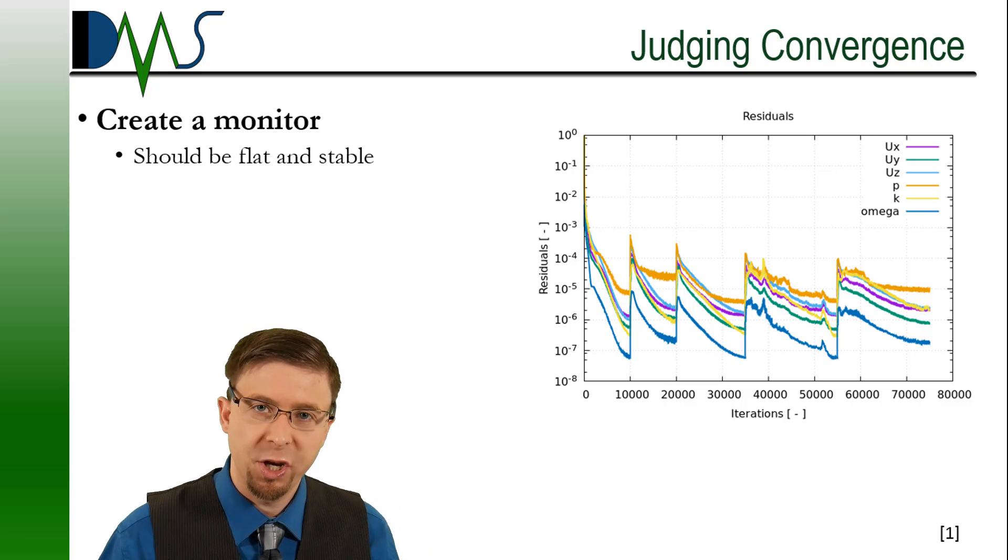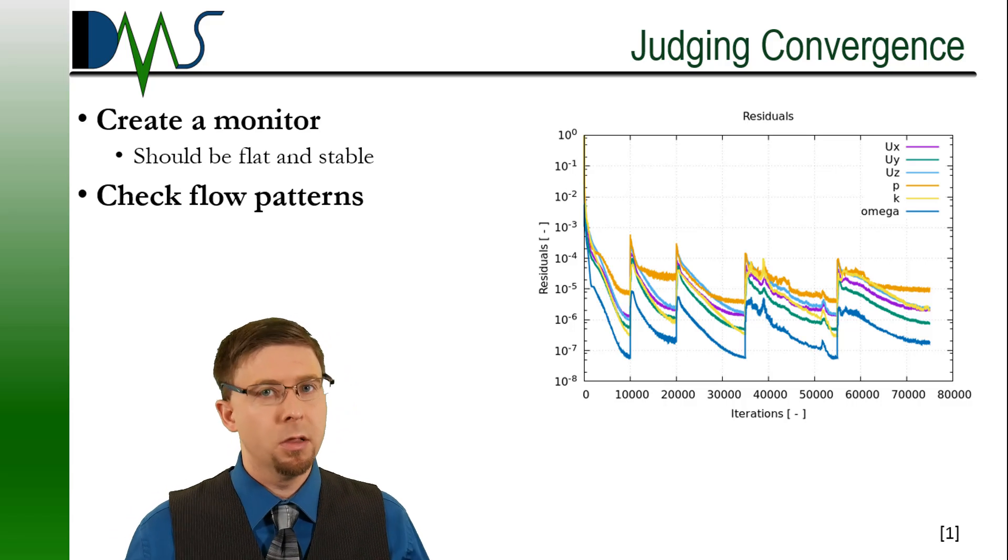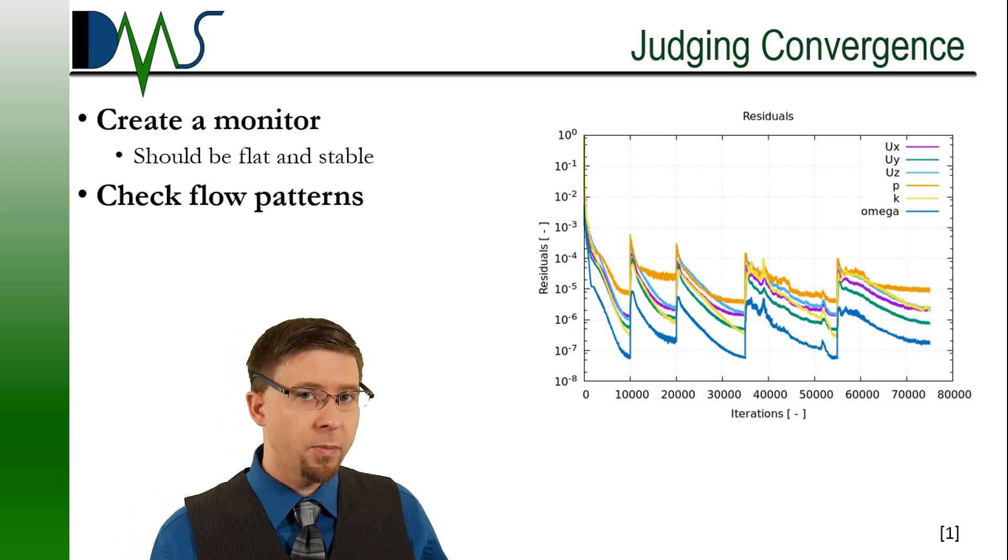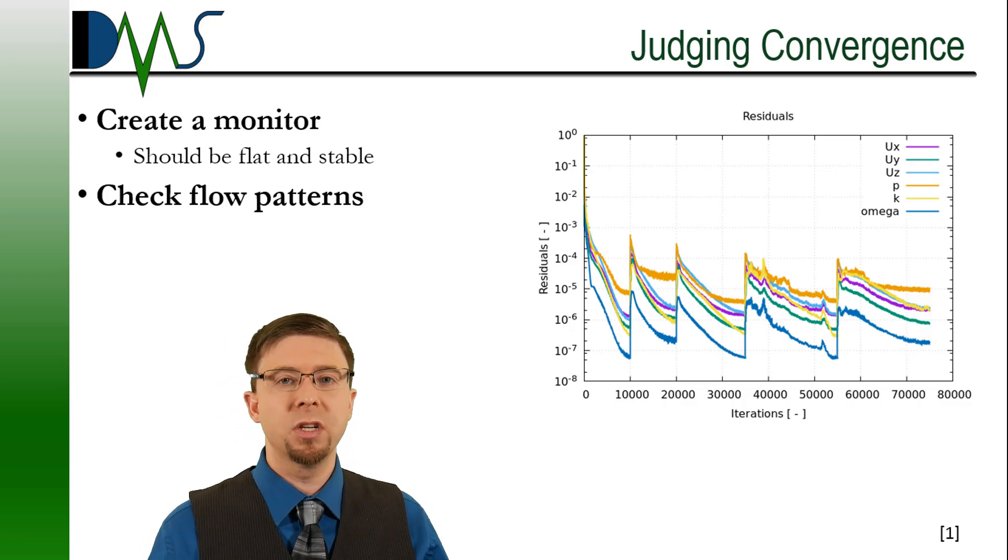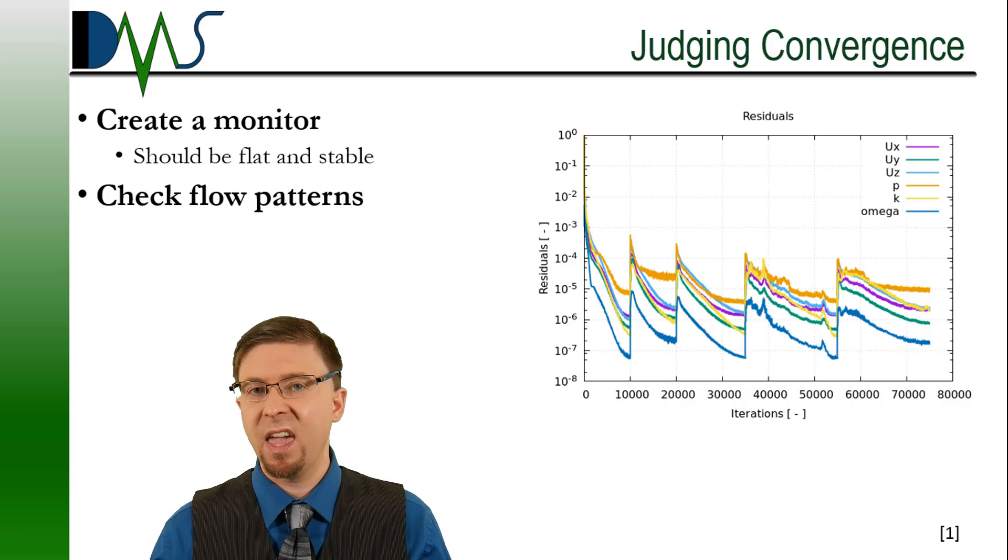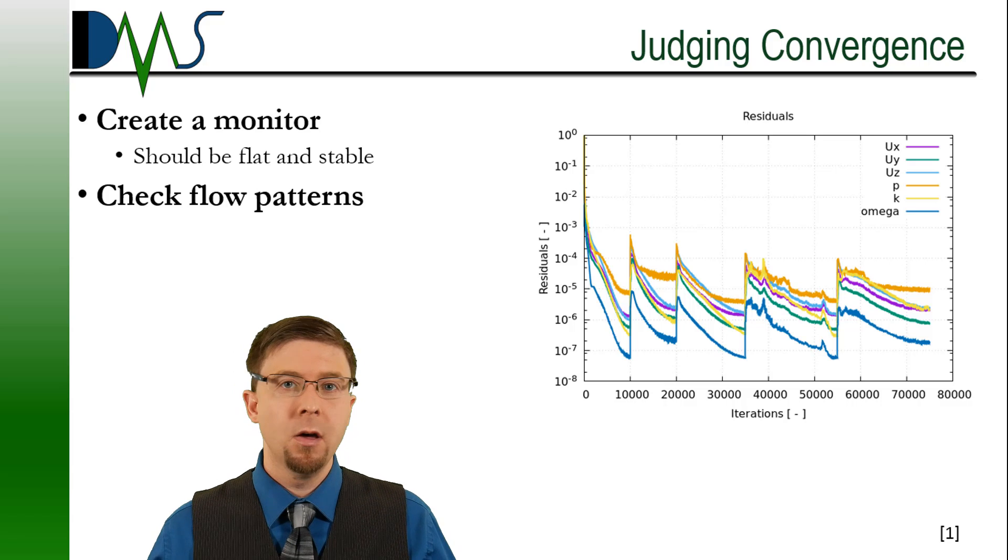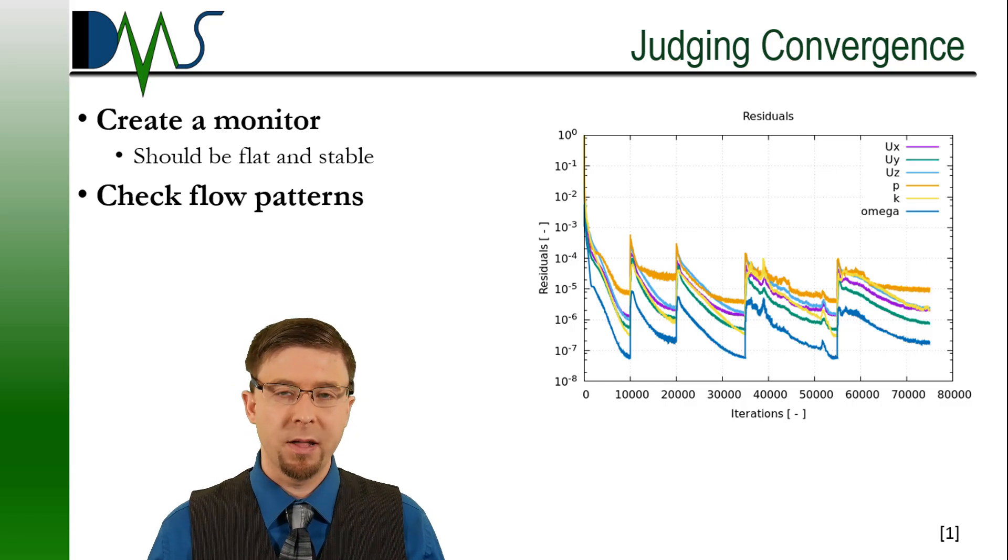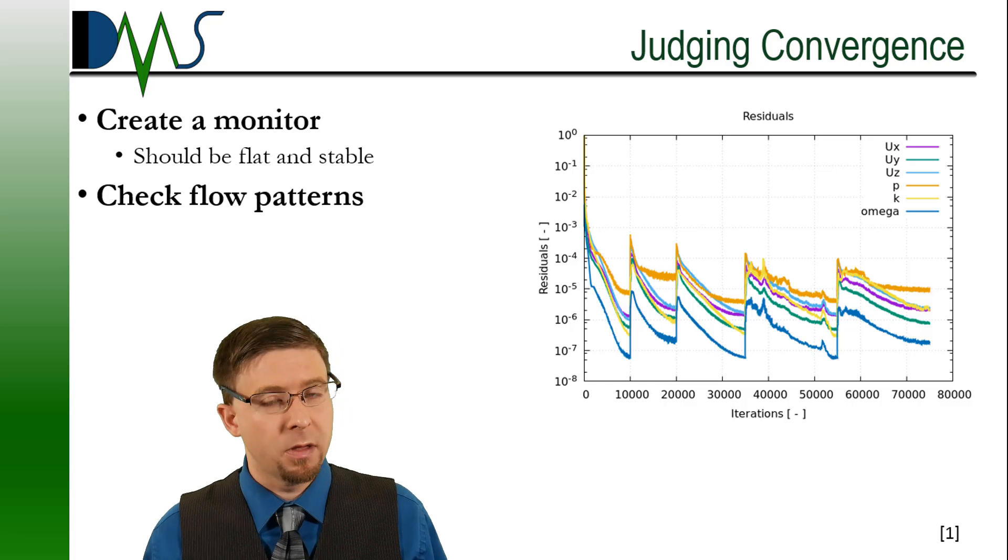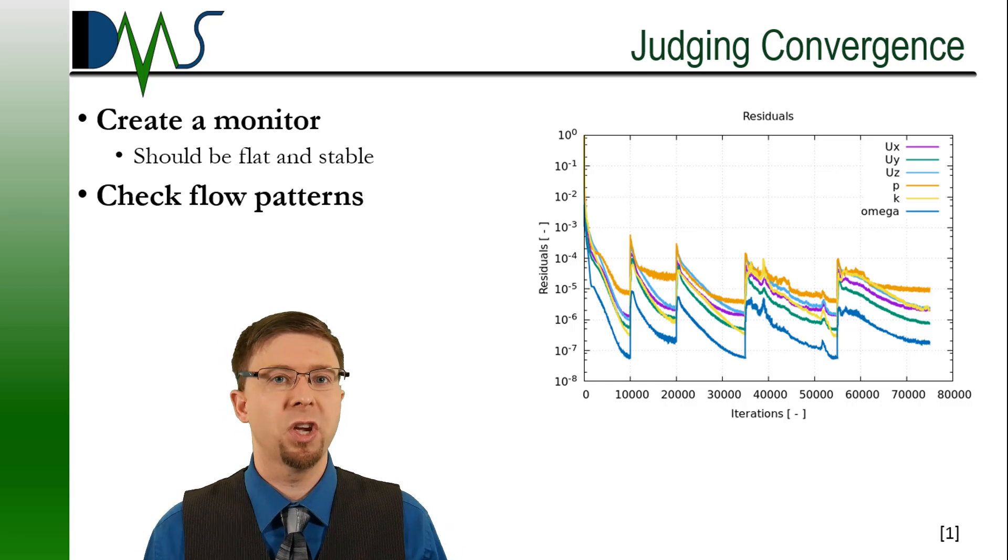The next thing you should also be checking is your flow patterns. Create visualizations in post-processing. Look at your flow patterns. Make sure that they make sense. Remember, your CFD solver is just a mathematical solver. All it knows is solving equations. It doesn't care whether or not the equations come out with real physical meaning. All it knows is that the equations balance. You, as the operator, you have to make sure the equations and the flow patterns have real physical meaning. So check your flow patterns.